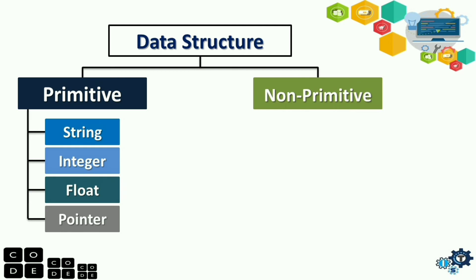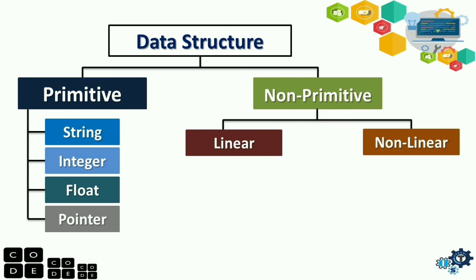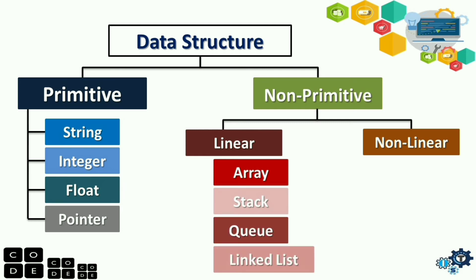The next for non-primitive data structure, we have linear and non-linear lists. So, ano yung mga linear lists? We have array, stack, queue, and linked lists. These are the linear lists. Under non-linear lists, these are the tree and graph.